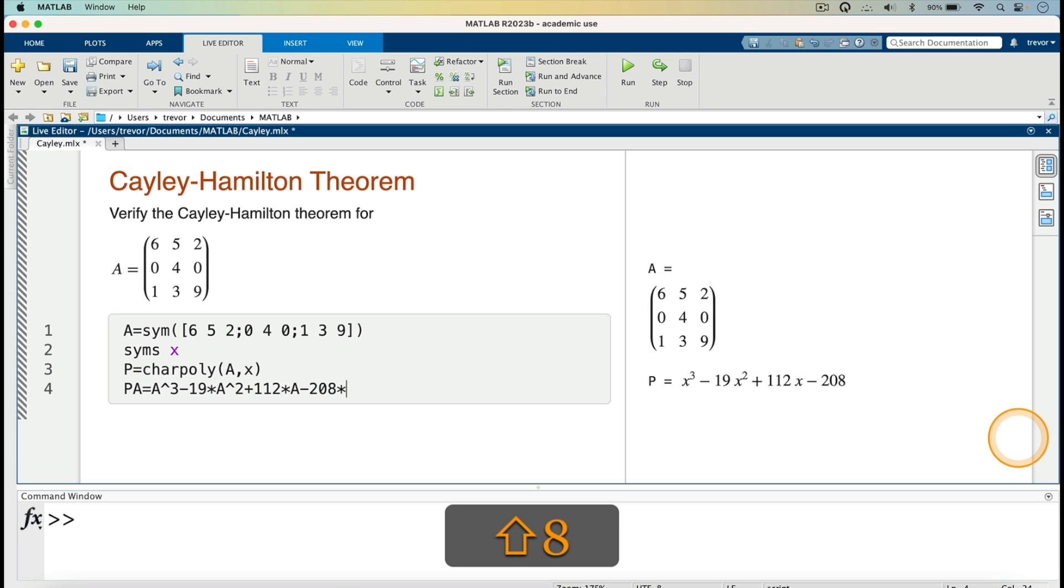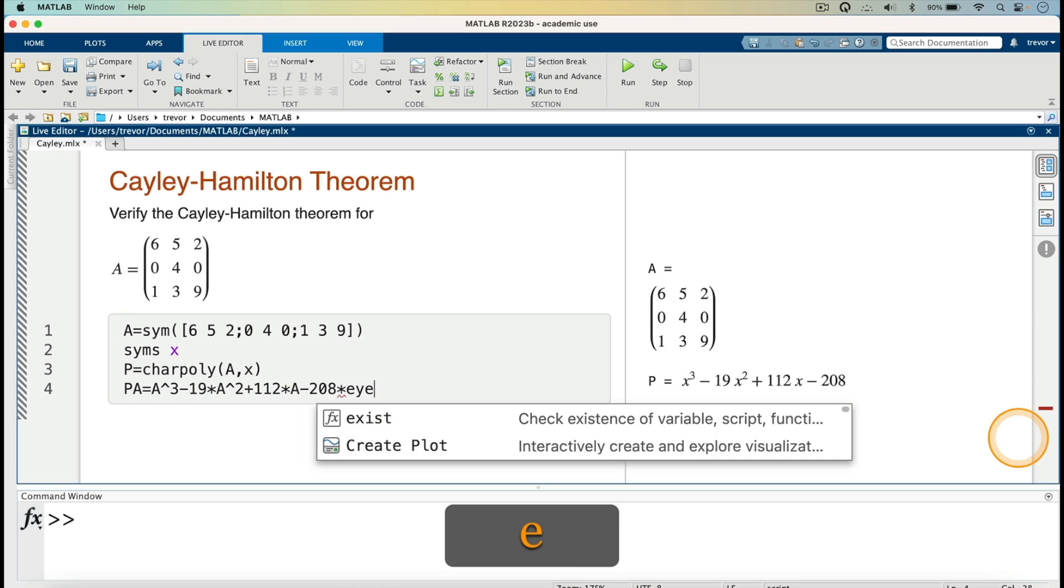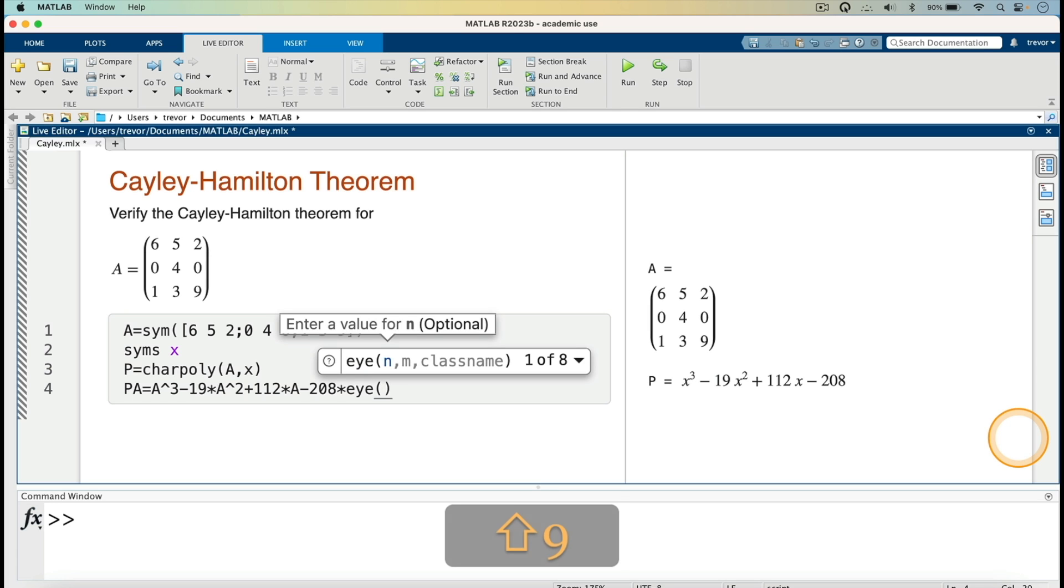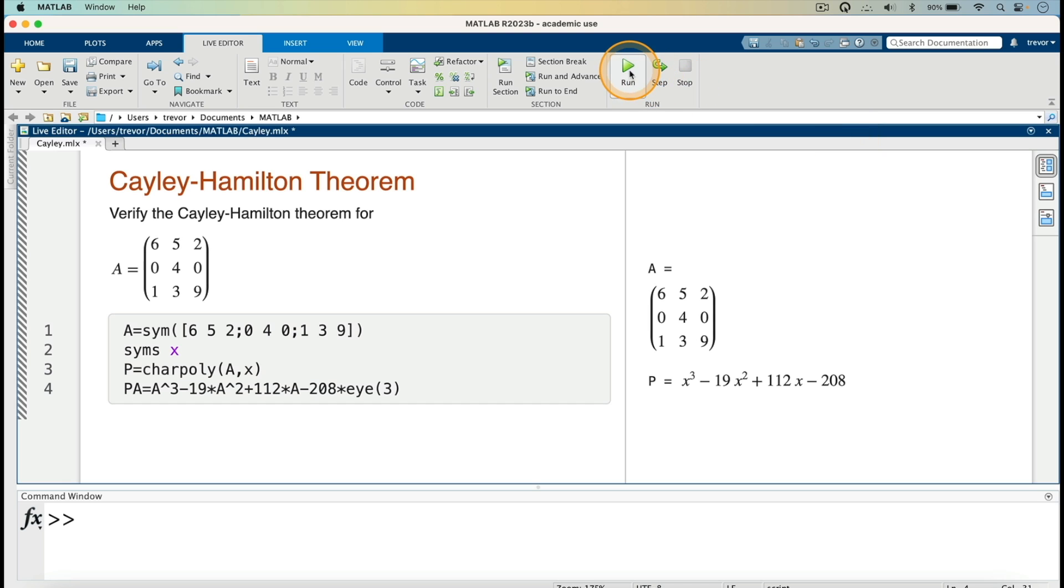So we say times I3, because I3 is the one that will give us the identity 3 by 3 matrix. So I can then run here.